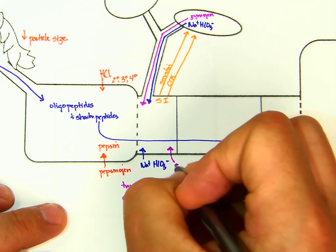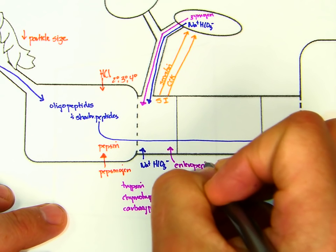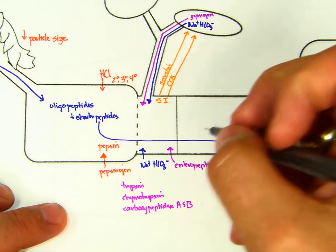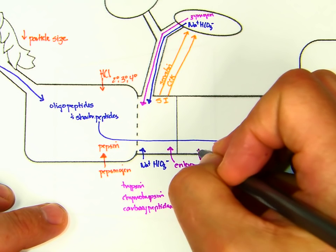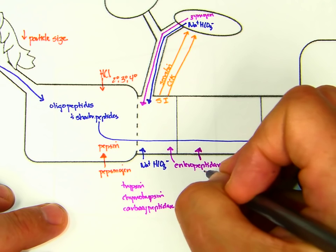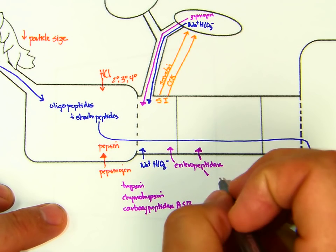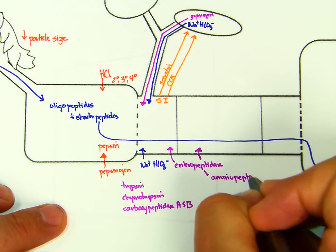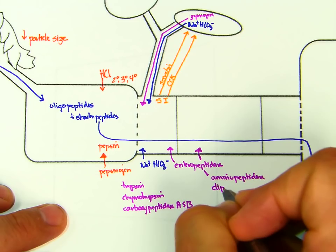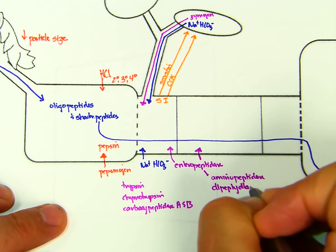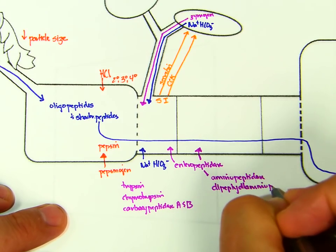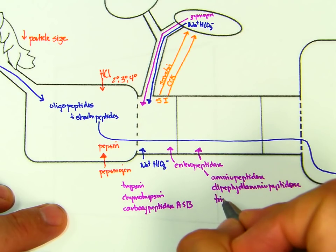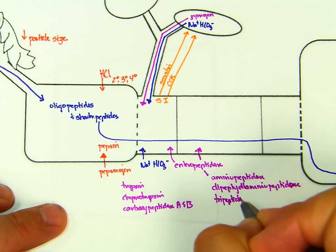We have enteropeptidase, which makes this activation happen, and horses again would be susceptible to trypsin inhibitor, or more so than the cow for sure, because they don't have fermentation prior to the small intestine. The other brush border enzymes would be aminopeptidase, dipeptidal aminopeptidase, and last but not least, tripeptidase.